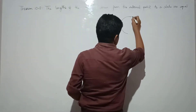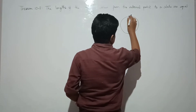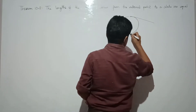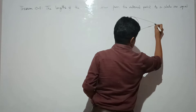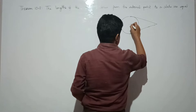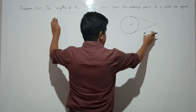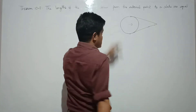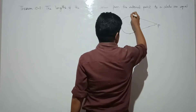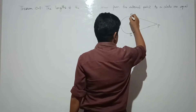Let us draw a circle. It would be a rough diagram. Let us say the name of the circle with center O. The length of the tangent drawn from the external point — let us say P — to the circle are equal. Let us say the tangent points of contact are named M and N.